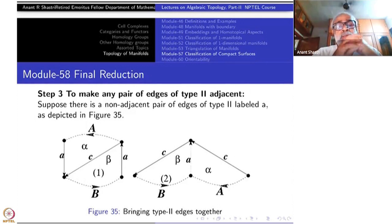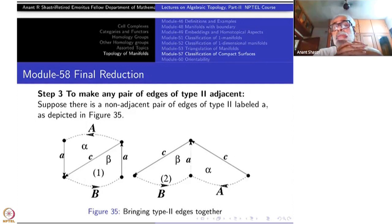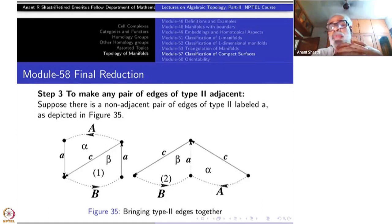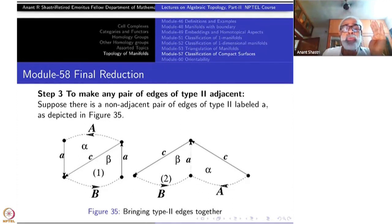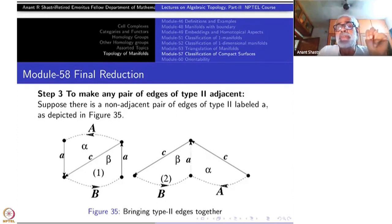The next step — there are three more steps. Step three here: to make any pair of edges of type 2 adjacent.